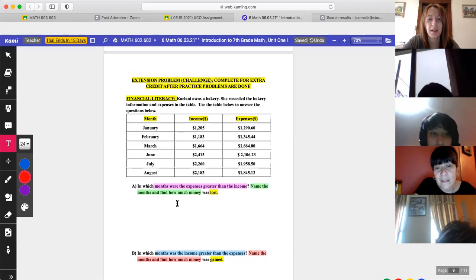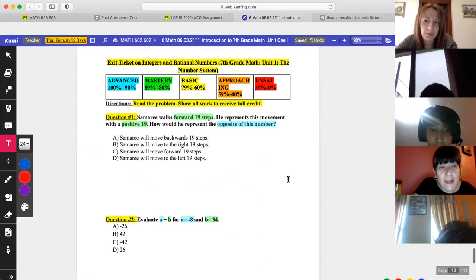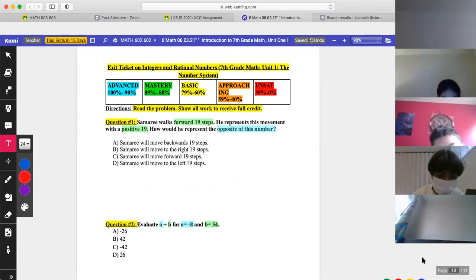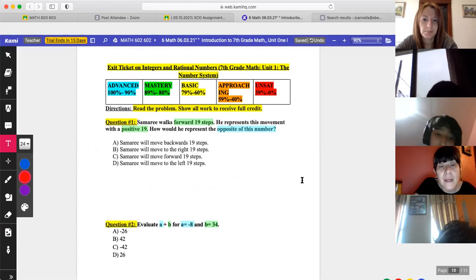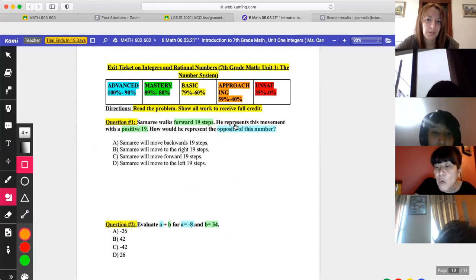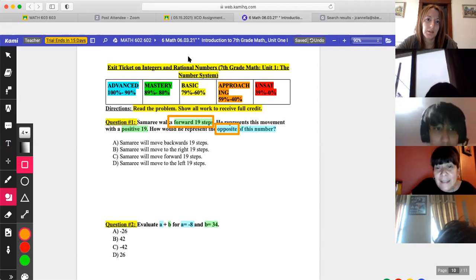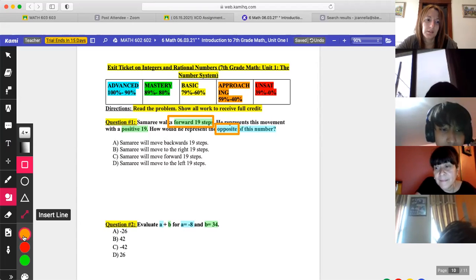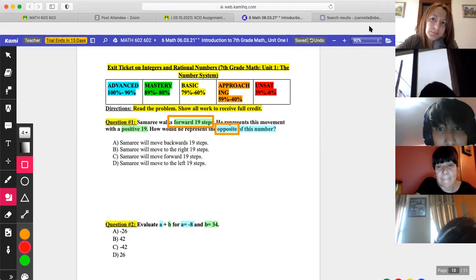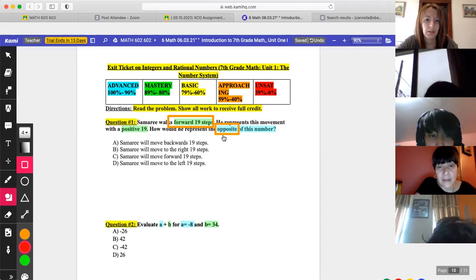I just want to take this away and take that away. Okay. So this is for you to do at your own leisure. If you would like to try it, I'm not going to spend time over it with you right now. That's just silly. But we're going to do these last three problems. All right. Exit ticket number one. So question number one. Samari walks forward 19 steps. He represents this movement with a positive 19. How would he represent the opposite of this number? And let's call on to do yelling. What's the opposite of forward? Backward. Thank you. I heard people say backwards. So which answer is it? A. Okay. Moving on. Good.